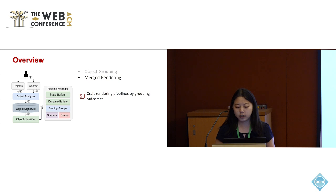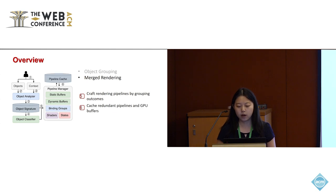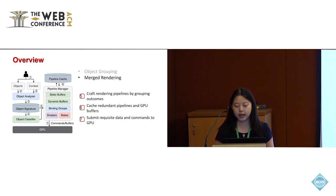For each object cluster, a dedicated rendering pipeline is crafted by their signatures and grouping outcomes. A pipeline cache is implemented to circumvent the creation of redundant pipelines and GPU buffers. The recorded data and commands for drawing each set of objects are submitted to the browser, enabling GPU-driven rendering.